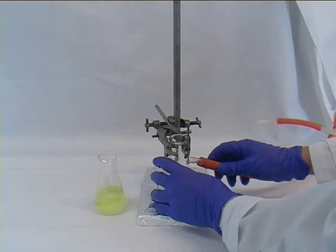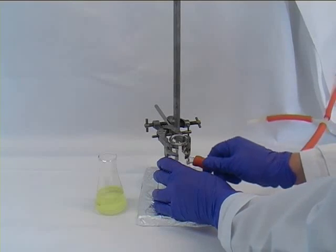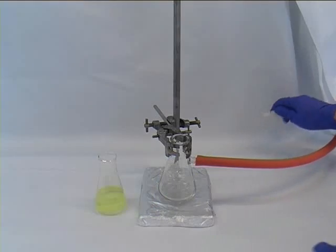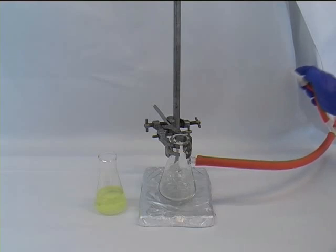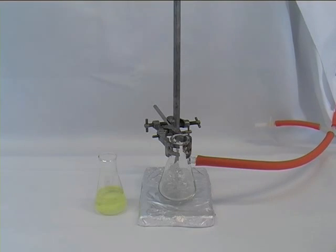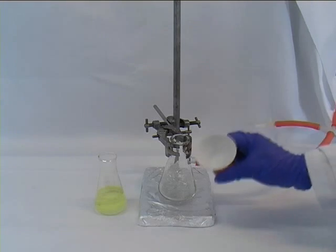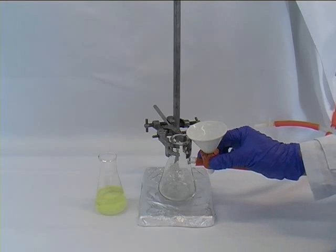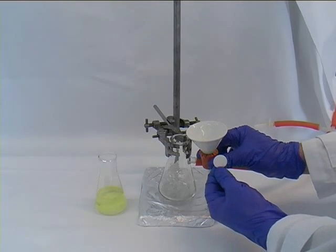The first one will be vacuum filtration, so you would be connecting the vacuum tubing, closing the white tab, and before you open the vacuum through the gray tab you have to put on the filter. We are going to be using a Hirsch funnel and a small filter paper.